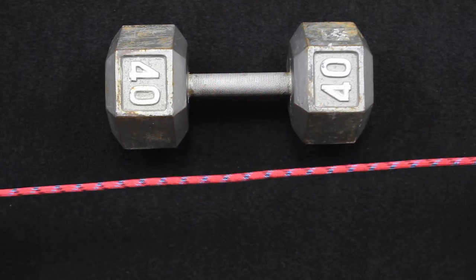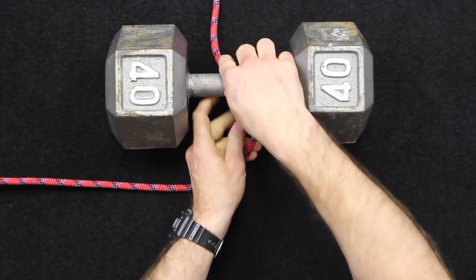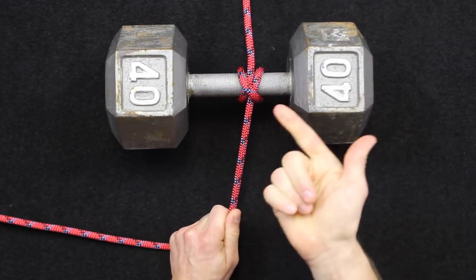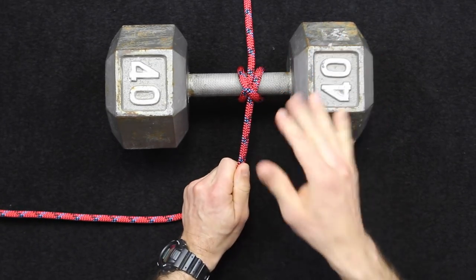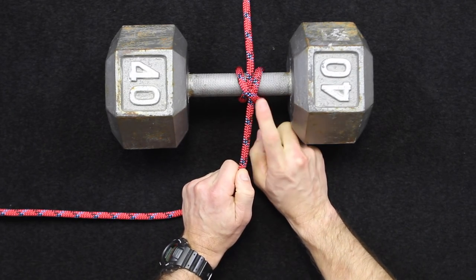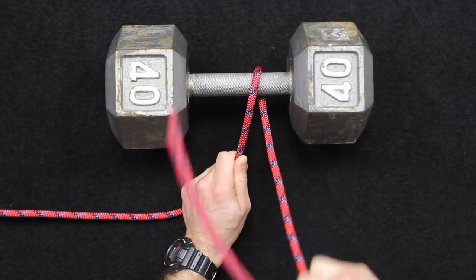So a couple limitations on the clove hitch. It's commonly used to tie off to a post like this. In the olden days, it was used to tie horses up to a post. You may still do that nowadays, but if you're going to use it for heavier objects like a boat or something like that, you need to be aware that it can fail under heavy load.